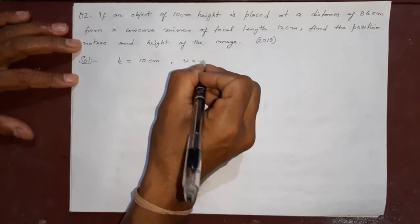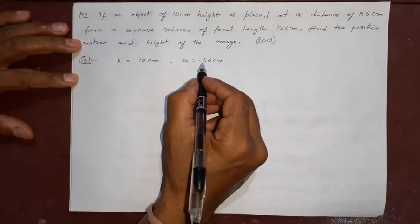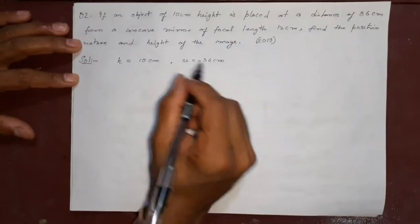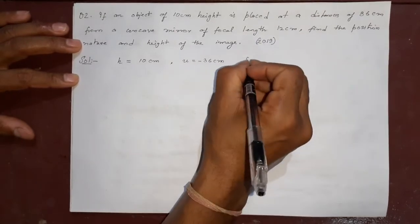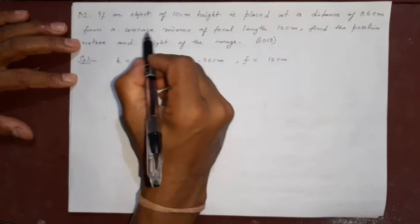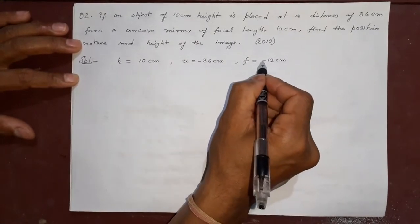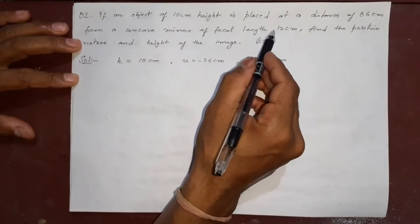From a concave mirror of focal length 12 centimeter, so f is equal to 12 centimeter. But one more thing is there - concave, concave means minus. Remember, concave mirror focal length is 12. Here there is no minus sign but you will understand from here concave means minus.